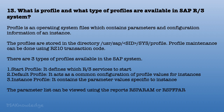What is a profile and what types of profiles are available in SAP R/3? A profile is an operating system file containing parameters and configuration information of an instance. Profiles are stored in the directory /usr/sap/SID/SYS/profile. Profile maintenance can be done using RZ10 transaction code. There are three types: Start profile, which defines which services to start; Default profile, which acts as common configuration for all instances; and Instance profile, which contains parameter values specific to an instance. The parameter list can be viewed using reports RSPARAM or RSPFPR.